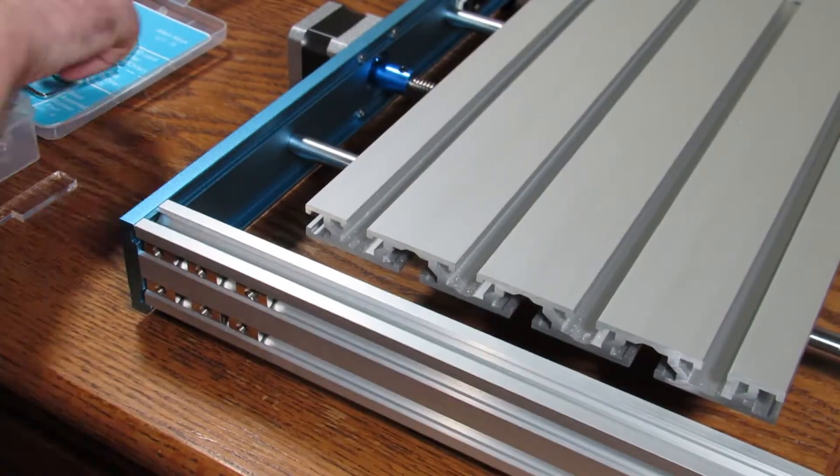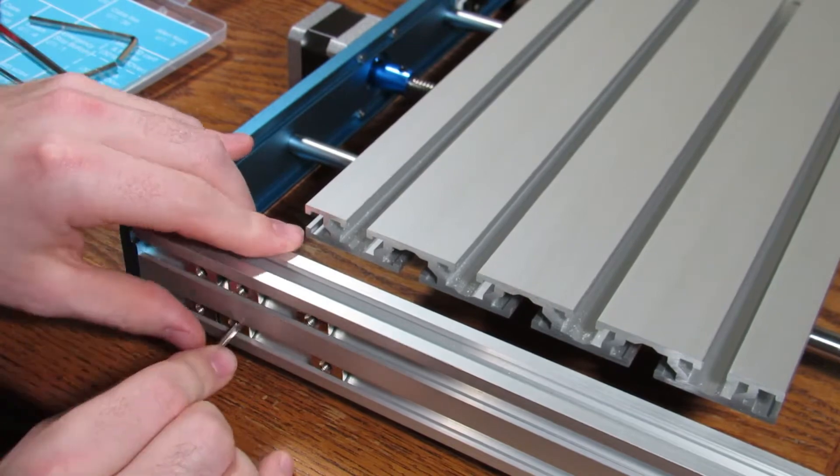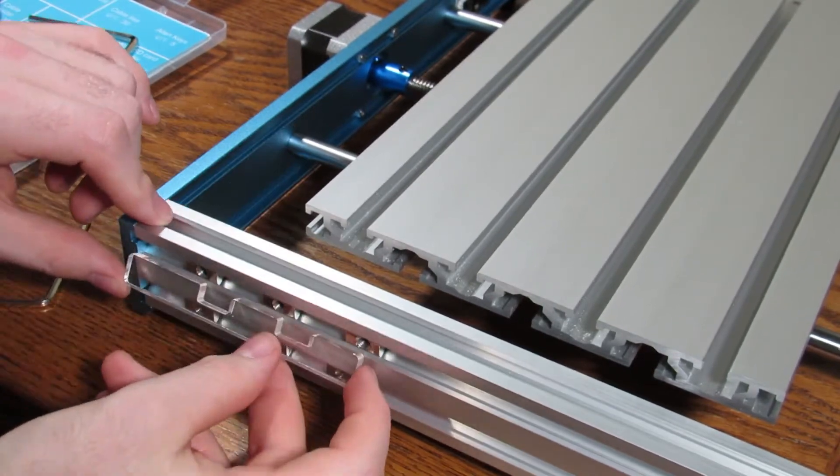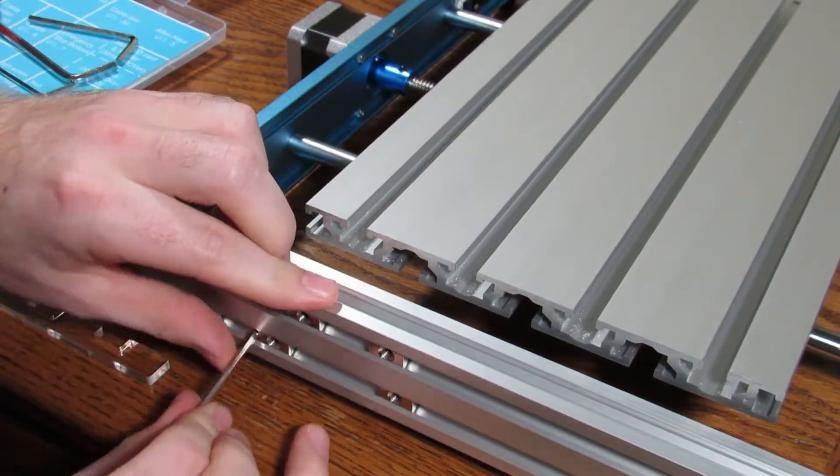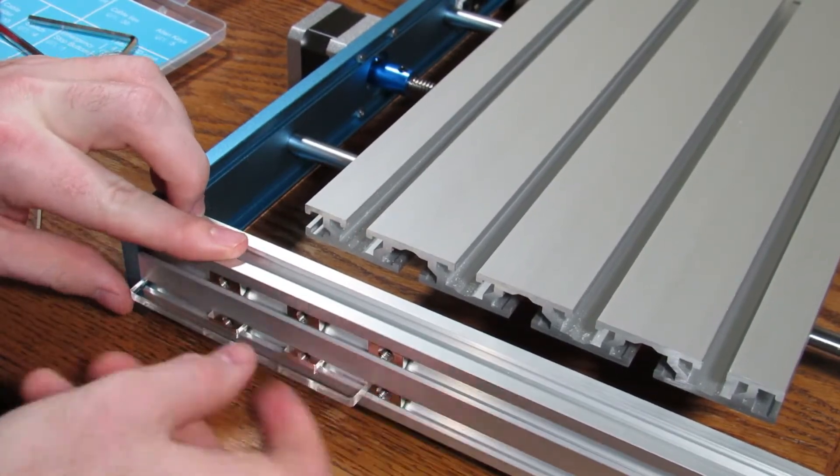And once you get the top, you can go ahead and copy the bottom over. Double check it. As you can see here, I get them a little short, so I extend it a little more. Get them where I want and move everything over. And voila. Perfect.